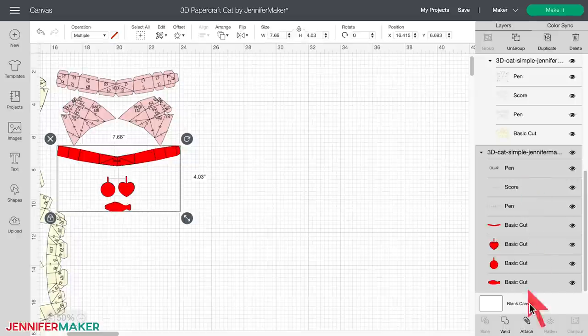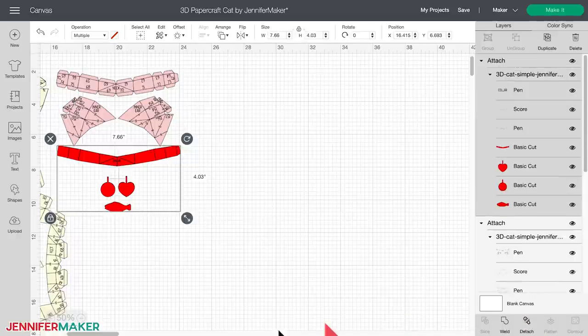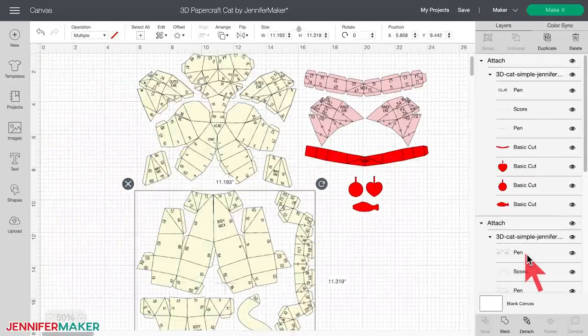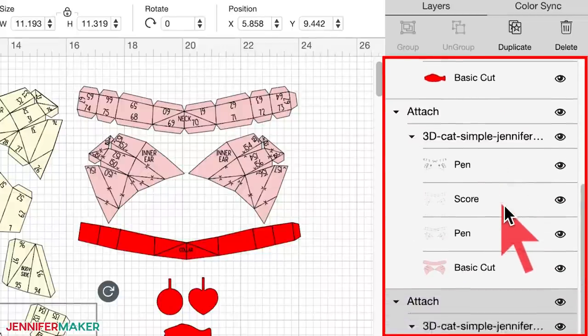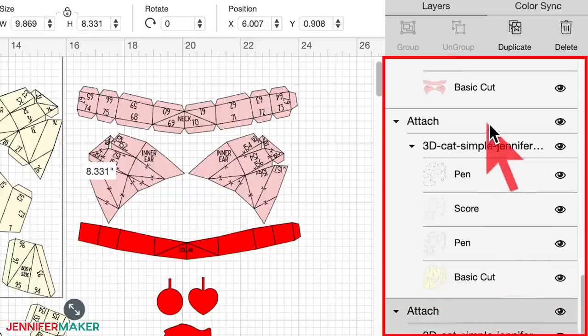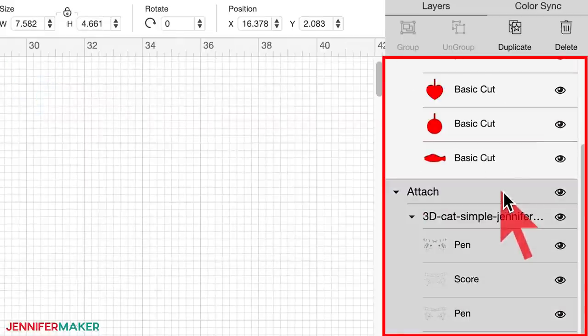This step is super important to do because if you don't do it, your Cricut won't know which cut layer you want your pen and score layers to appear upon. And they'll just be floating out on a mat all by themselves and it's not what you want. This is what the layers panel in Cricut Design Space should look like when every pen and score line is properly attached to its base cut layer.